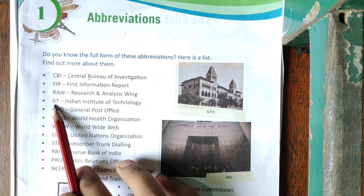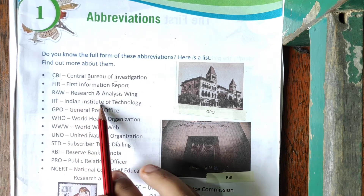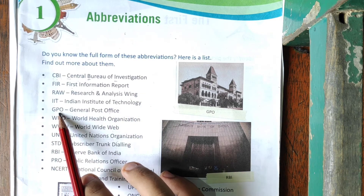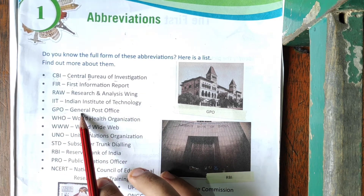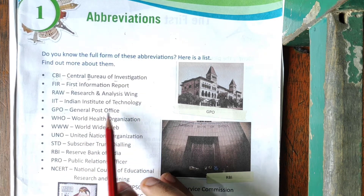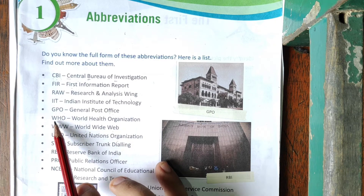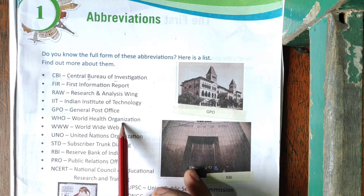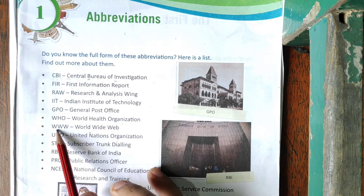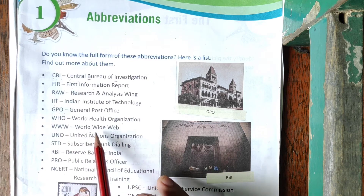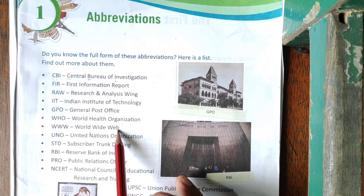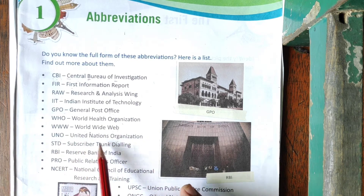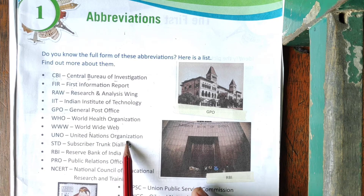Next, IIT — Indian Institute of Technology. GPO — General Post Office. WHO — World Health Organization. WWW — World Wide Web. UNO — United Nations Organization.